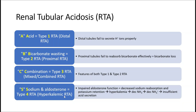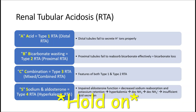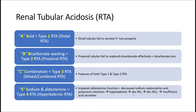In type 4 RTA, the pathology is that there's impaired aldosterone function, so that results in decreased sodium reabsorption and potassium retention, which causes hyperkalemia. As a result of hyperkalemia, you have decreased NH3, which causes decreased NH4+, resulting in insufficient acid secretion, causing your body to retain more of the acid, and again you have metabolic acidosis.